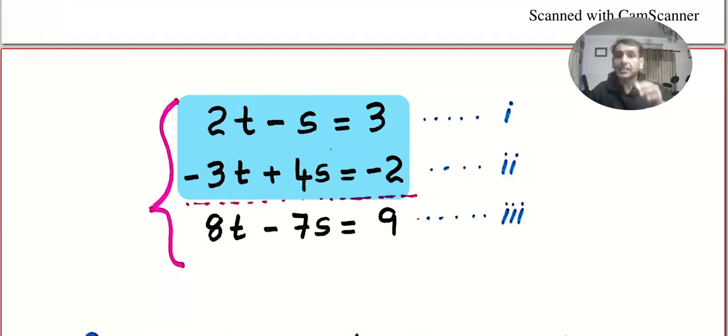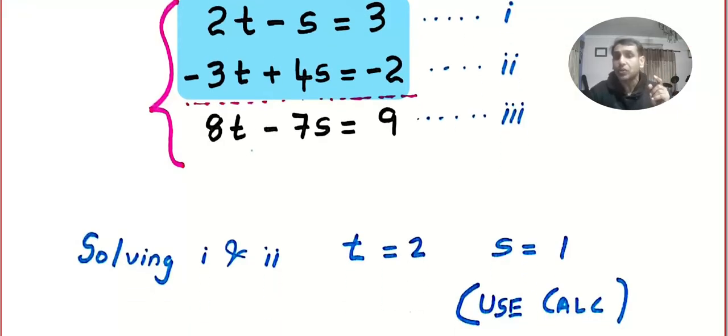Now, you take a calculator and solve any two. Normally, everyone solves the first two. I also did that. Once more, use a calculator. Don't waste your time. Because when you do engineering and higher mathematics, we don't care about these simple things. Use a calculator. Solve it. I got t equal to 2, s equal to 1. Comment below if the answer is correct. So I got t equal to 2 and s equal to 1. Now what I did is, I took this t value and s value and I'm plugging it here.